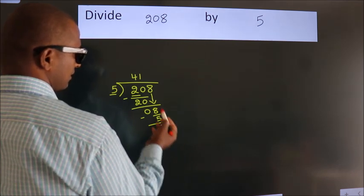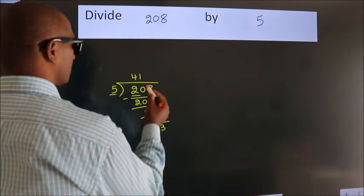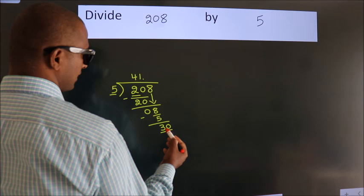After this, no more numbers to bring it down. So what we do is we put dot, take 0. So 30.